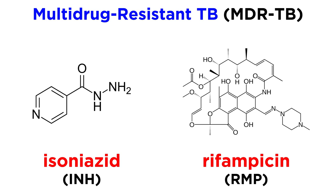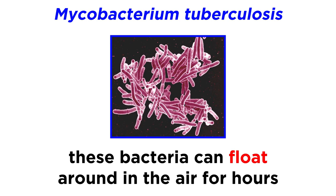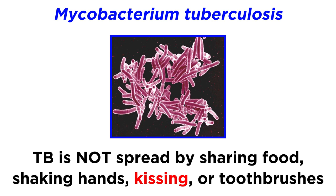The bacteria that cause TB spread through the air from person to person through talking, singing, or coughing. A person can breathe in these bacteria from another person's cough and become infected. In fact, these bacteria can float in the air for several hours, depending on the environment. It's worth mentioning that TB is not spread by sharing food, shaking hands, kissing, or sharing toothbrushes.